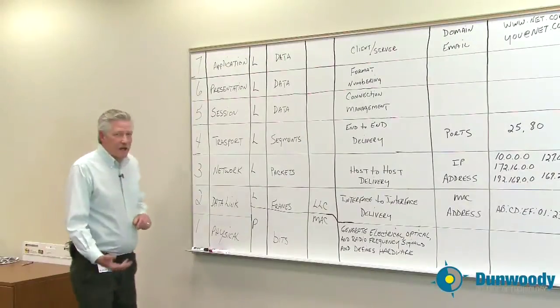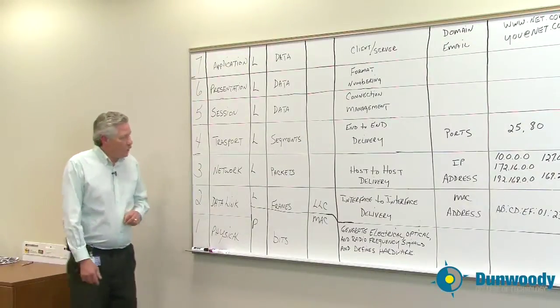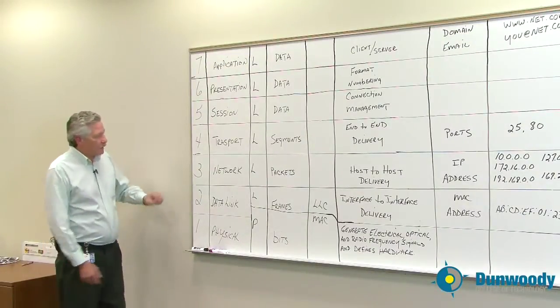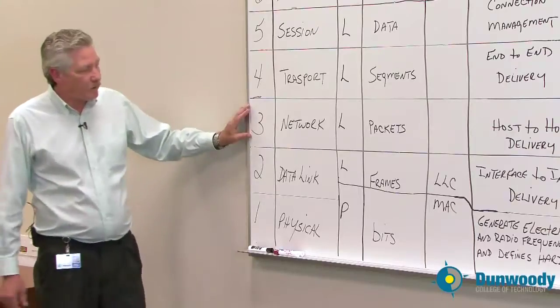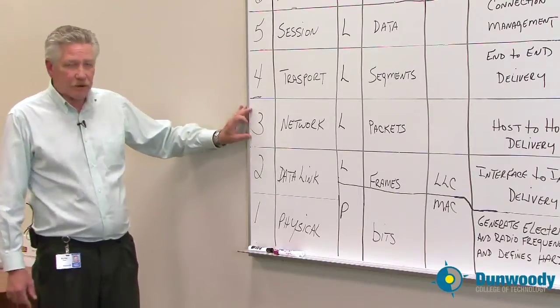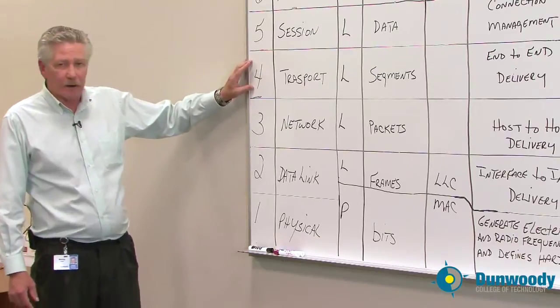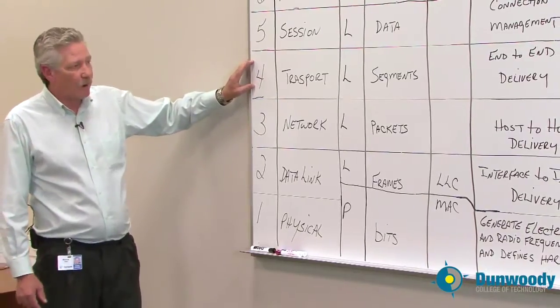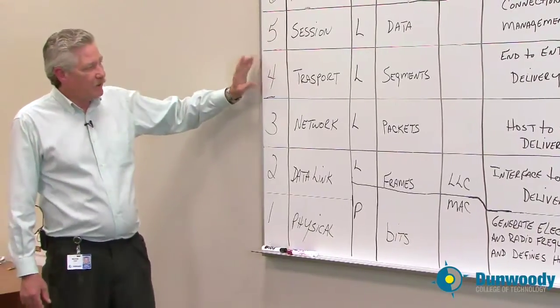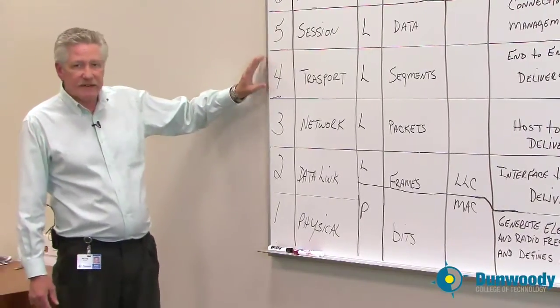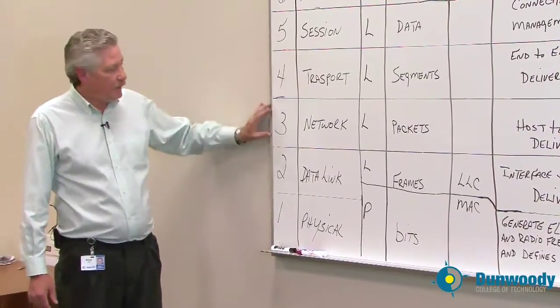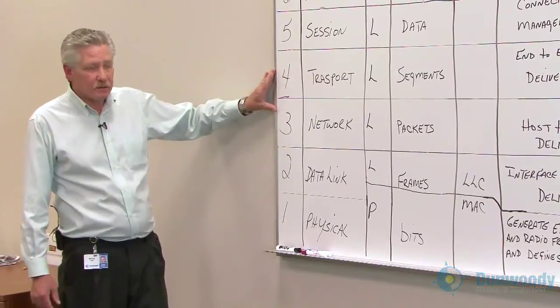In the next segment, we're going to be learning about the network layer, or layer three, and the transport layer, layer four. This is where TCP/IP happens.